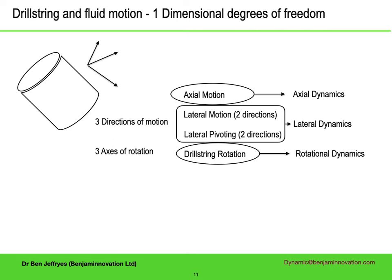In long boreholes, especially those which are not completely straight — which in practice is all of them — lateral motions do not propagate a long way. The lateral dynamics of the BHA is either not seen at all at the surface, or only because of secondary effects. I'll have a lot more to say about lateral dynamics in the final three presentations, but until then I will just be talking about axial and rotational motion, and also the fluid in the pipe, which has a single degree of freedom.